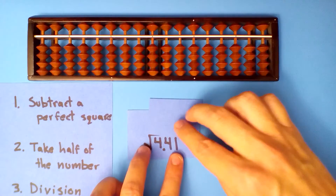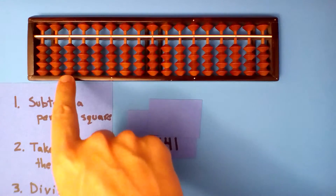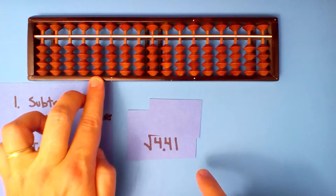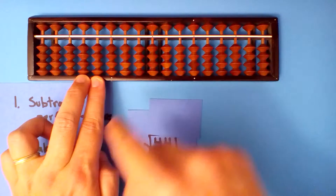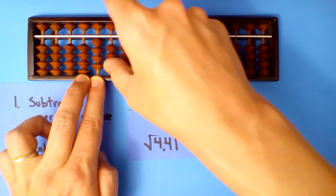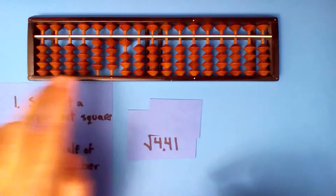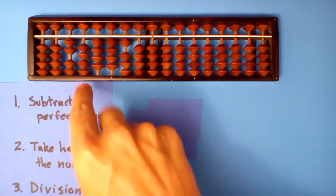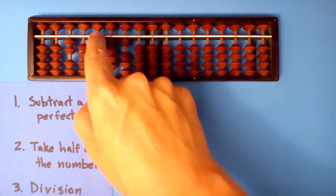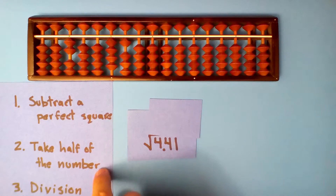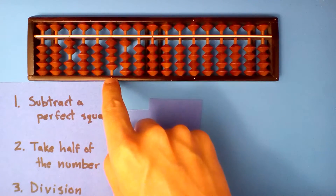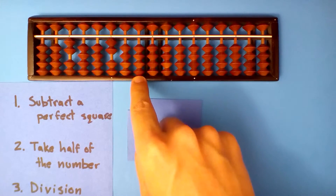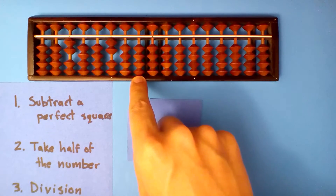What's the square root of 4.41? I'll set up my root here and my number here. This is the tens and the ones, so four, decimals one. Subtract a perfect square: two squared is four, so I'll set up two here and subtract two squared. Next, take half of what's left. Half of four is two. Half of one is zero with one left over. Since we had one left over, half of ten is five.